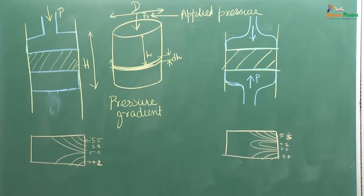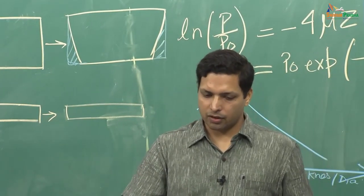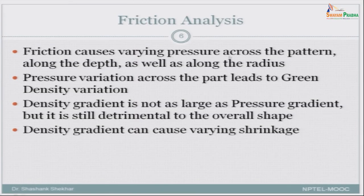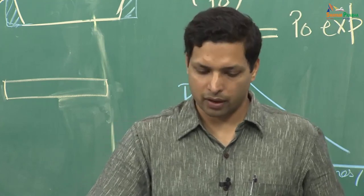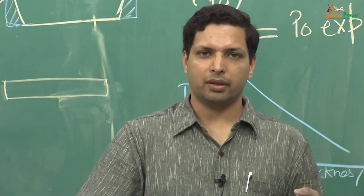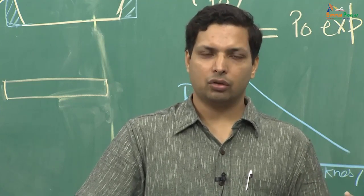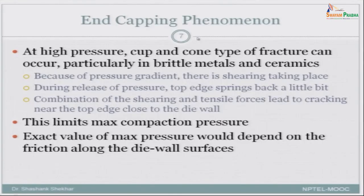Now, when we are doing this compaction, there is also a phenomenon called end capping. But before that, let us come back to our slide. Friction causes varying pressure across the part along the depth, as well as along the radius. The pressure variation across the part leads to green density variation, which is more of concern. The density gradient — although not as large as the pressure gradient, perhaps only a few percent change versus 20% pressure variation — is still enough to cause differential shrinkage and is detrimental to the overall shape.